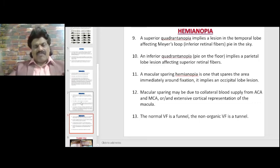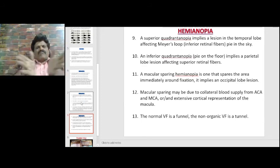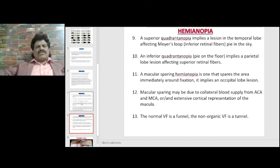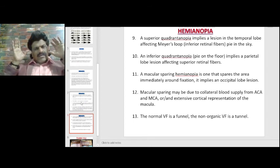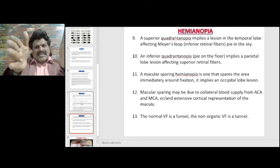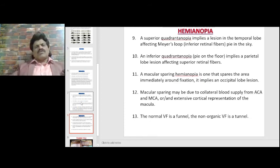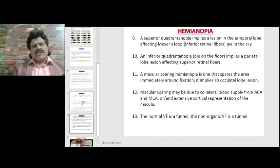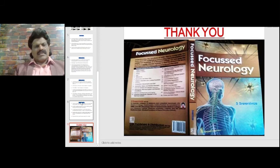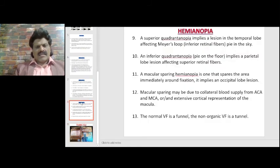The normal visual field is funnel-shaped: as you move backwards, the field of vision expands. In non-organic visual field loss, the field is tunnel-shaped — even moving backwards does not expand the field. So a funnel shape is characteristic of organic visual field defects, and a tunnel shape is characteristic of non-organic field defects.